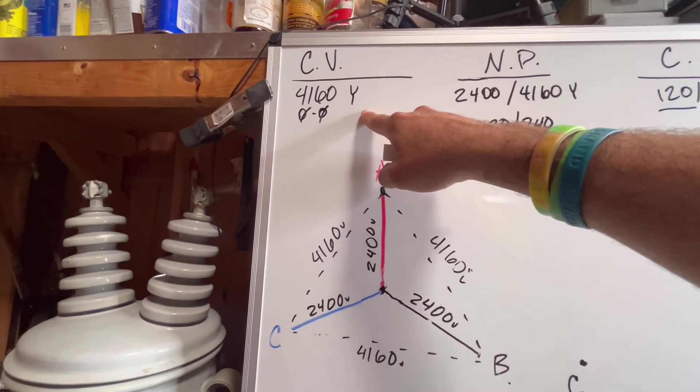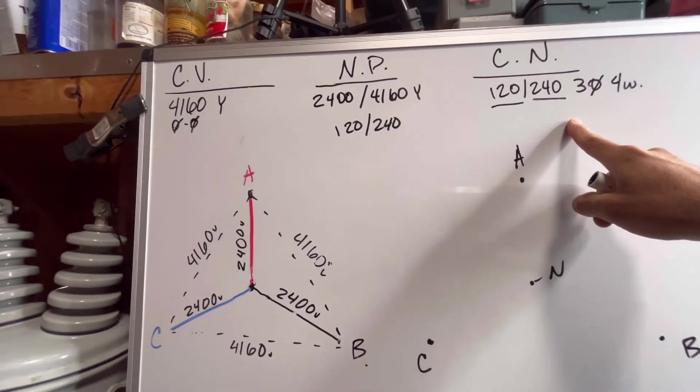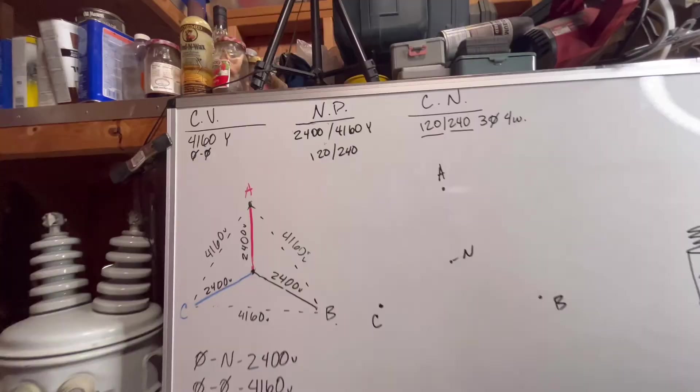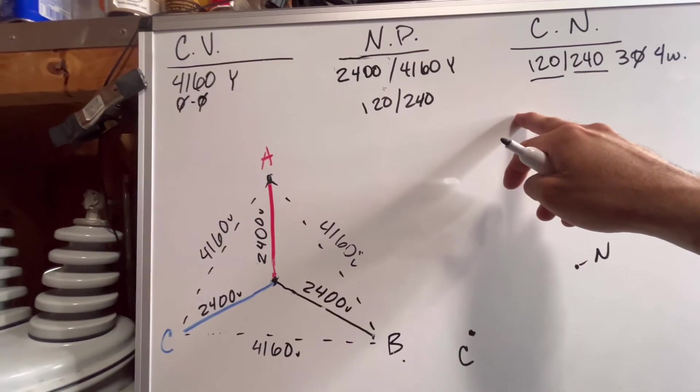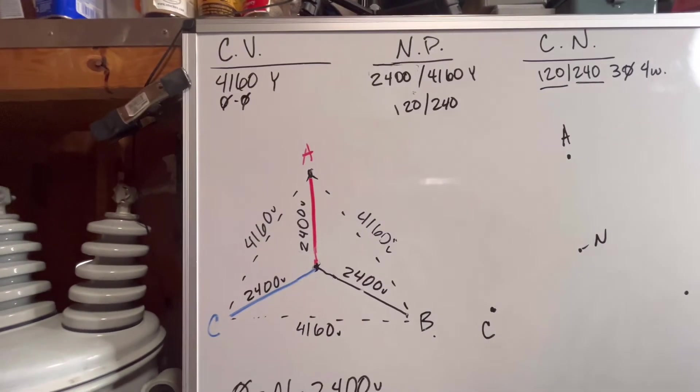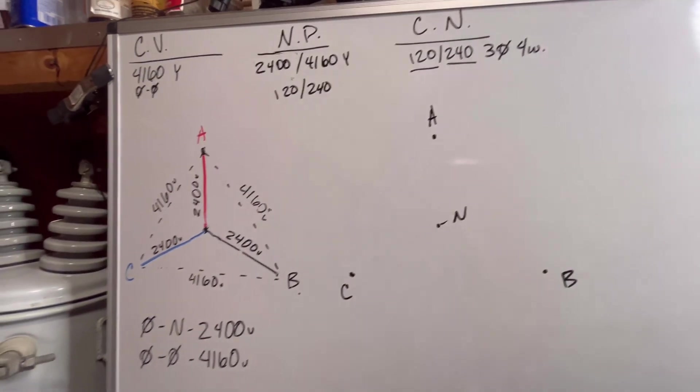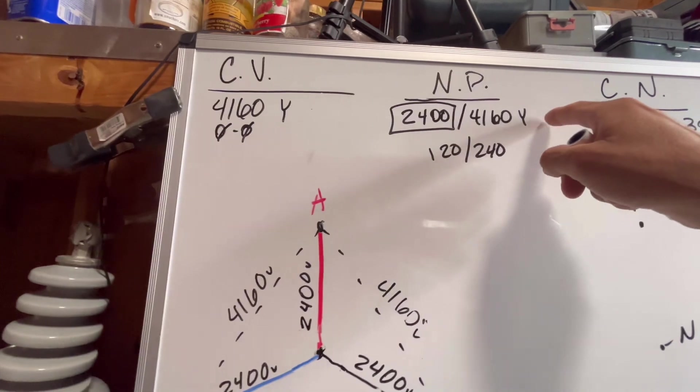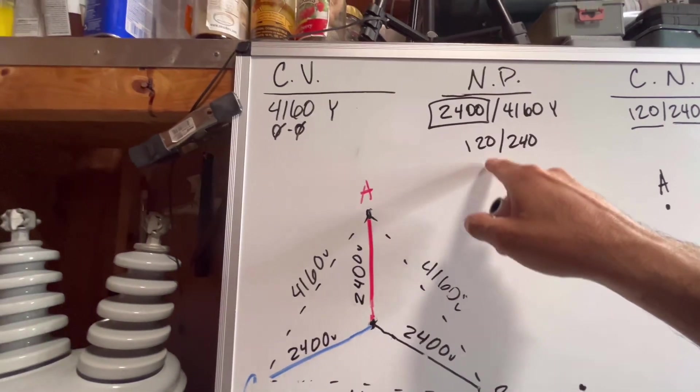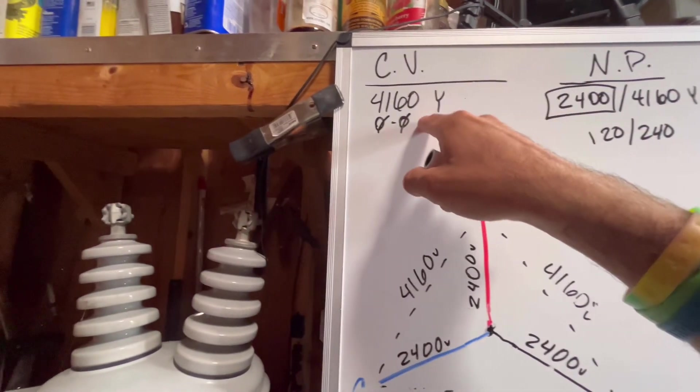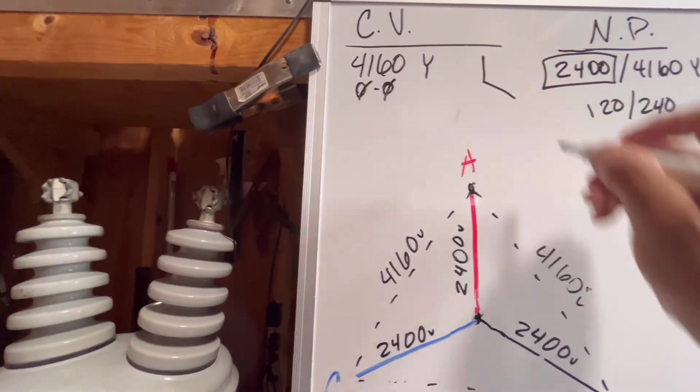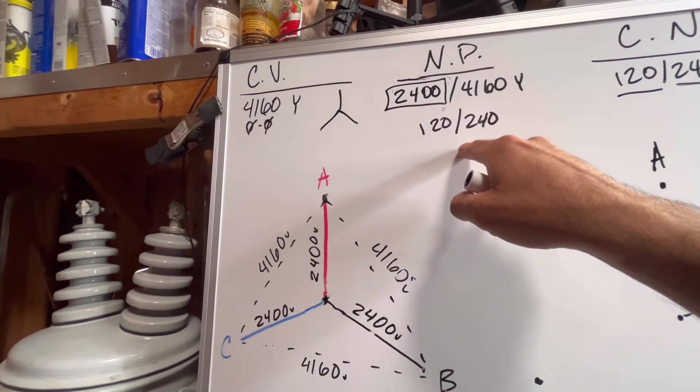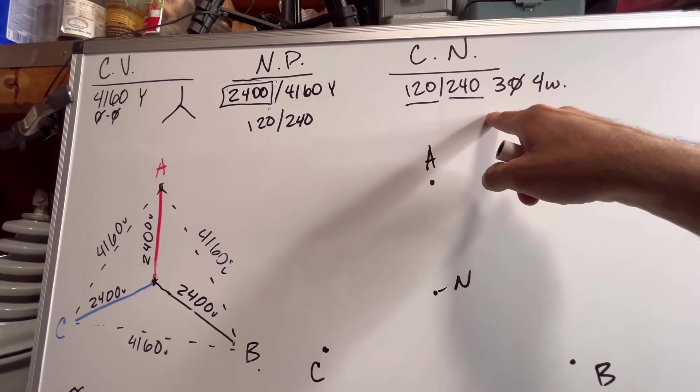So looking at our circuit voltage, our nameplate information, and our customer needs, the first thing we need to determine is our primary hookup, either Y or delta, and our secondary hookup, Y or delta. This transformer needs 2400 volts running through the primary coil in order to give us 120/240 output. So 2400 volts on this circuit is going to be a Y hookup. My secondary hookup is going to be determined by my customer's voltage needs, not the nameplate.